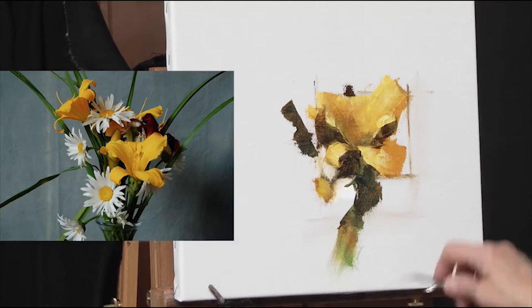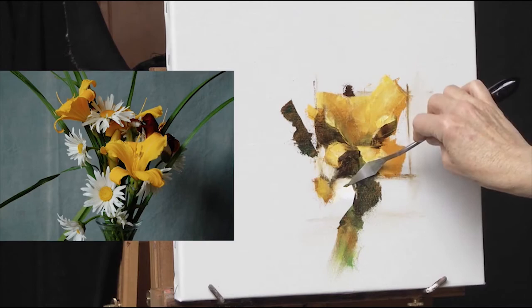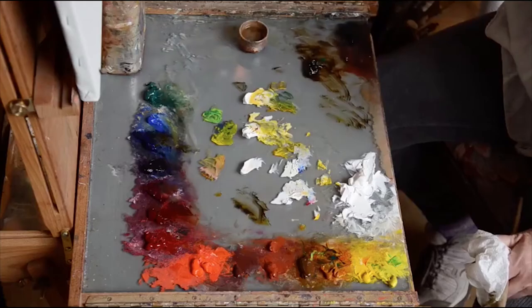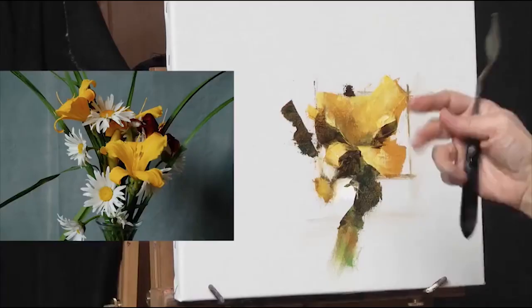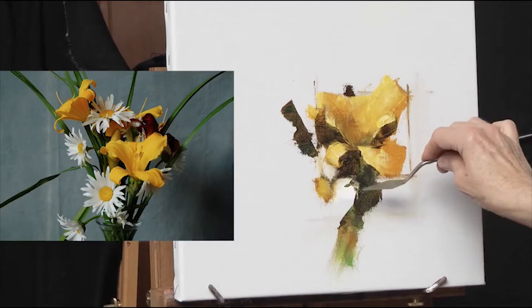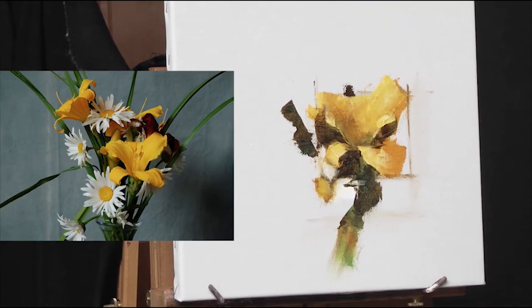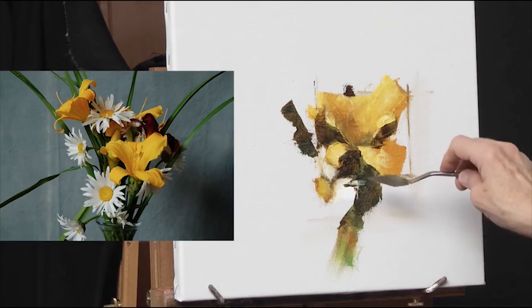But if you go in and put a bunch of bright green on those stems, you're not going to have anything left to really make the color of this flower sing in terms of chroma. You won't have anything left to make the flower even brighter than the statement you made with the stems.